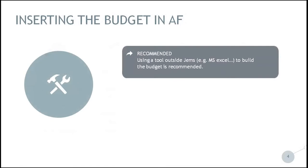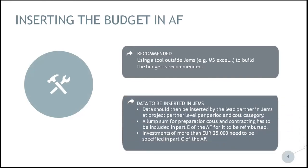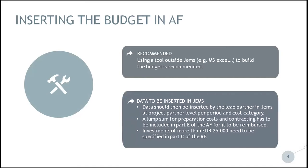When building the project budget, we recommend to use a support tool outside of JAMES. It can be a Microsoft Excel or another tool found online. Tools used by applicants must allow planning at the level of each partner, cost categories and reporting periods, and also the use of simplified cost options applicable and required by the partner. Prepared data should then be inserted in JAMES by the lead partner at the project partner level. The total budget in JAMES will be calculated automatically. A lump sum for preparation costs and contracting has to be included in Part E of the application form for it to be reimbursed, and investments of more than €25,000 need to be specified in Part C of the application form.